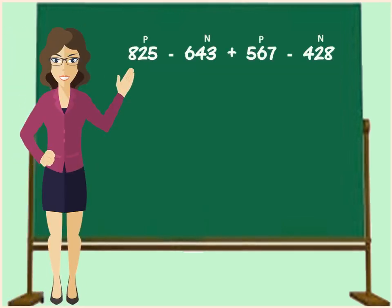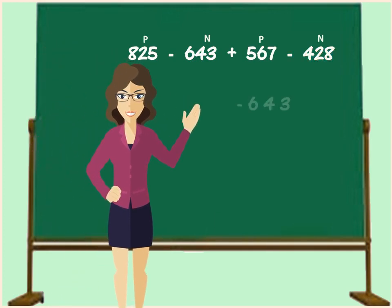The negative numbers are minus 643 and minus 428. To add them, we will write minus 643 plus minus 428. The minus sign here does not mean that you have to subtract the numbers. It just denotes that the numbers are negative. Hence, we will put the minus sign within brackets. Remember that when you add negative numbers, the sum will also be a negative number.